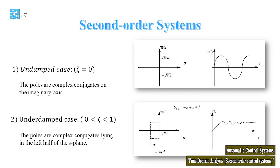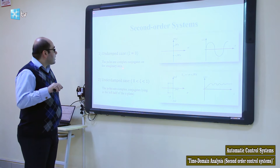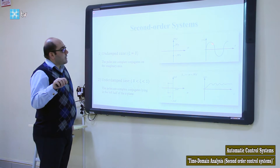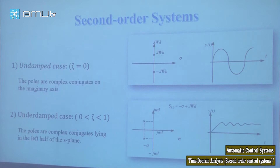If our poles are located on the imaginary axis, the response will be undamped, as shown here. This is the response of the second-order system when the poles are in that configuration. In this case, our zeta is equal to 0.